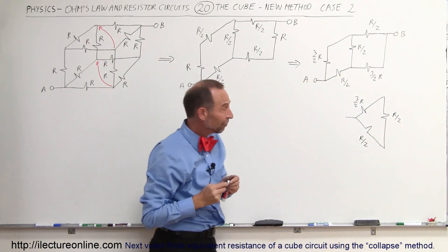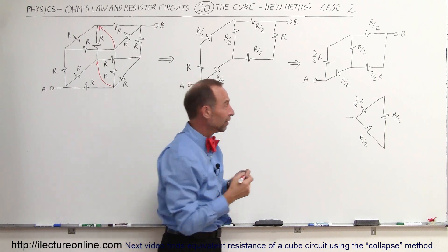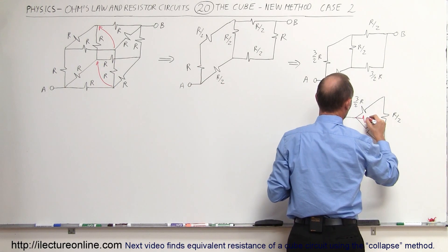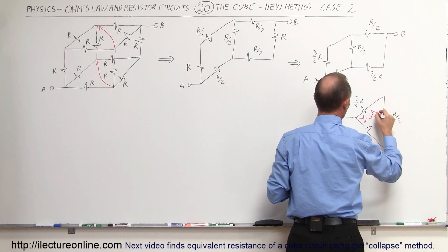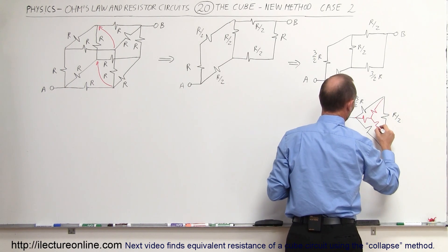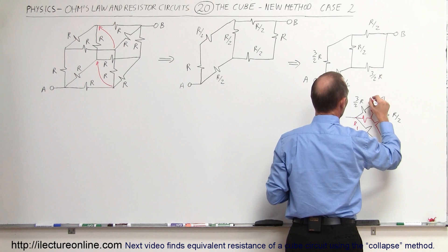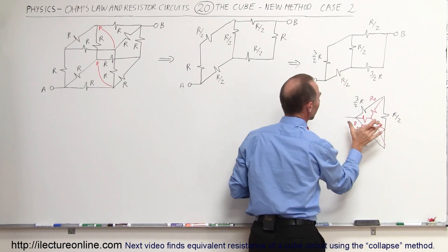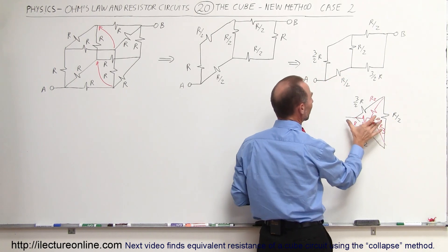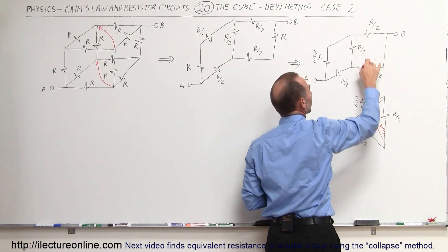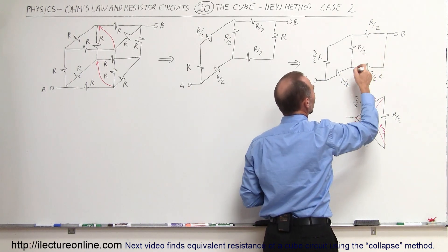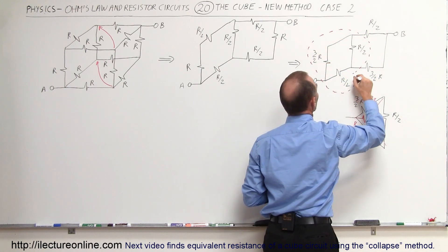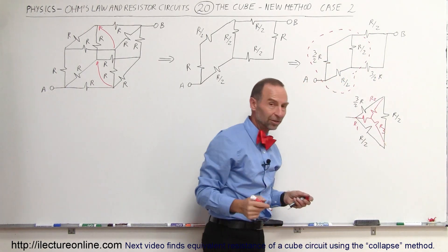The way we can solve that is to convert it into an equivalent Y circuit. So we have R1, R2, and R3. If we connect that delta circuit — this being 3/2 R — to the last two resistors, notice that this is the delta circuit we're going to convert to a Y circuit.